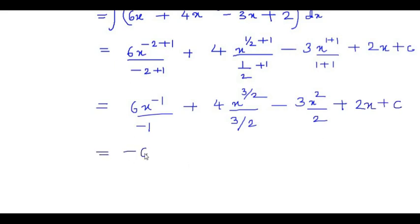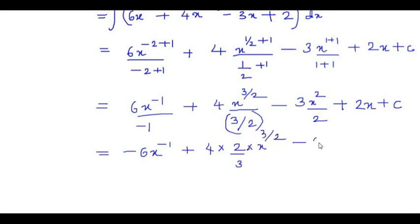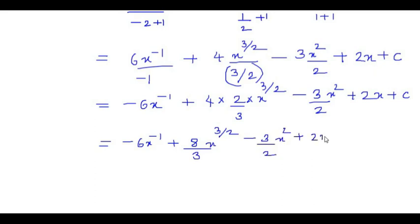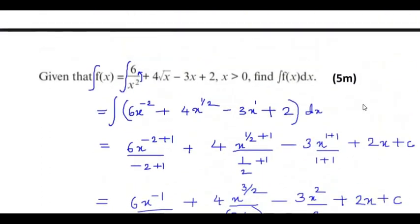Simplifying: 6x to the power of minus 1 over minus 1 gives minus 6x to the power of minus 1. For the second term, dividing by 3 over 2 flips to multiply by 2 over 3, giving 8 over 3 times x to the power of 3 over 2. Then minus 3 over 2 x squared plus 2x plus C. This is the final answer — you should show at least 5 to 6 steps for a 5-mark question.